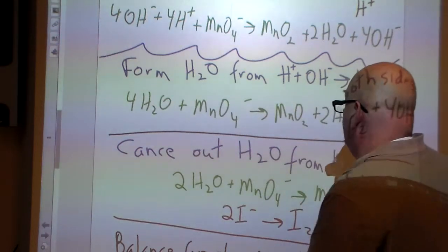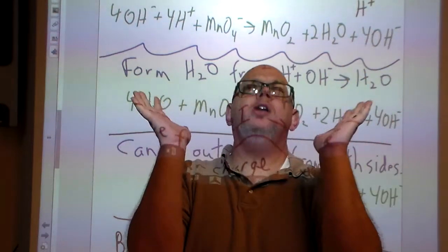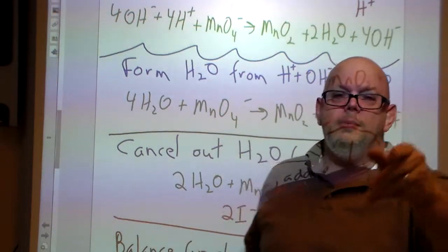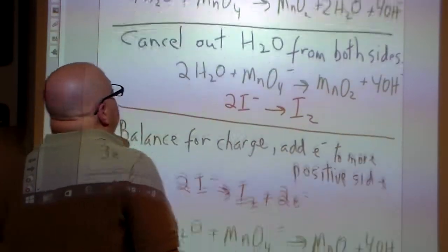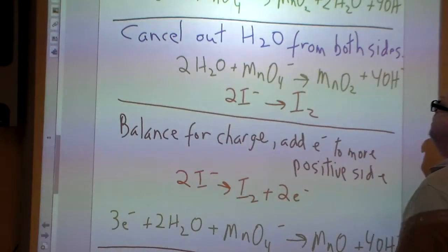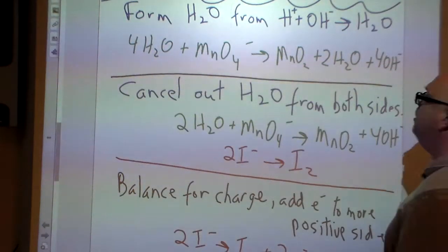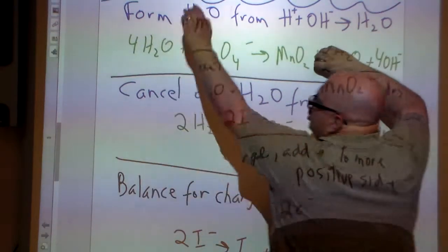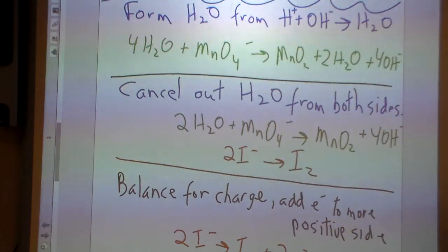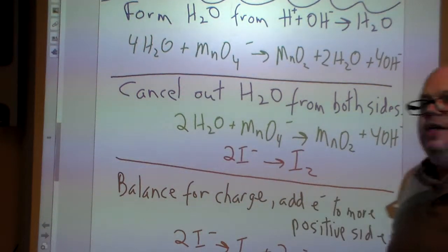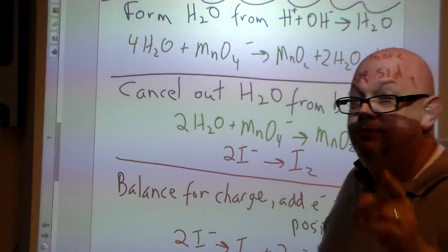Now we're going to form water from our H plus OH getting us H2O. So we're going to have four waters here and the MnO4, we get MnO2 plus 2H2O and the 4OH. We just simply went and combined the hydrogen with the OH. Next trick, let's cancel out the waters. We had four waters here, two waters here. Two go down, two go down. No waters on this side, we got two waters left over. Notice I brought down the 2I to I2. Notice we haven't had to do anything with them as of yet because there's no oxygen, no hydrogen.